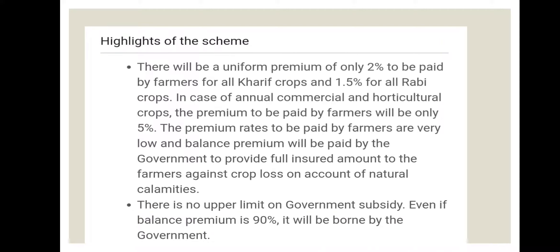Now let's talk about the highlights of this scheme. The first highlight is there will be a uniform premium of only two percent to be paid by farmers for all Kharif crops. In case of annual commercial or horticultural crops, the premium to be paid by farmers will be five percent fixed of the sum insured. The premium rates to be paid by farmers are very low and the balance premium will be paid by the government to provide the full insured amount to farmers against crop loss on account of natural calamities.